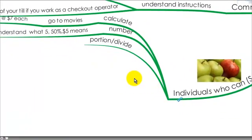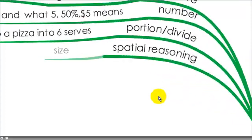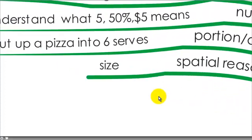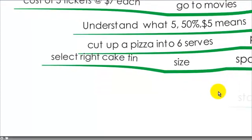That I'm able to portion and divide, like cut up a pizza, so if six people get a piece each. That I have spatial reasoning, that I can work out the size of things. For example, select the right cake tin to bake my batter in.